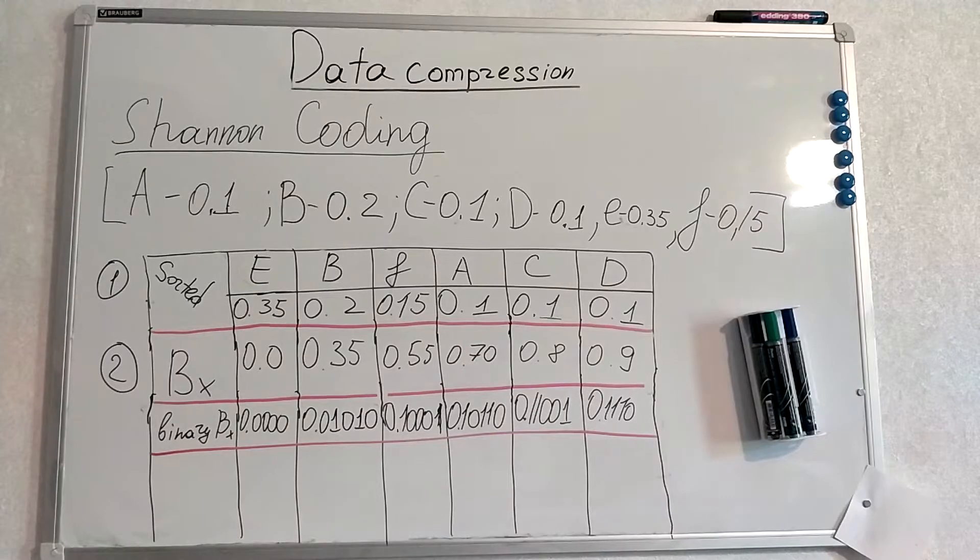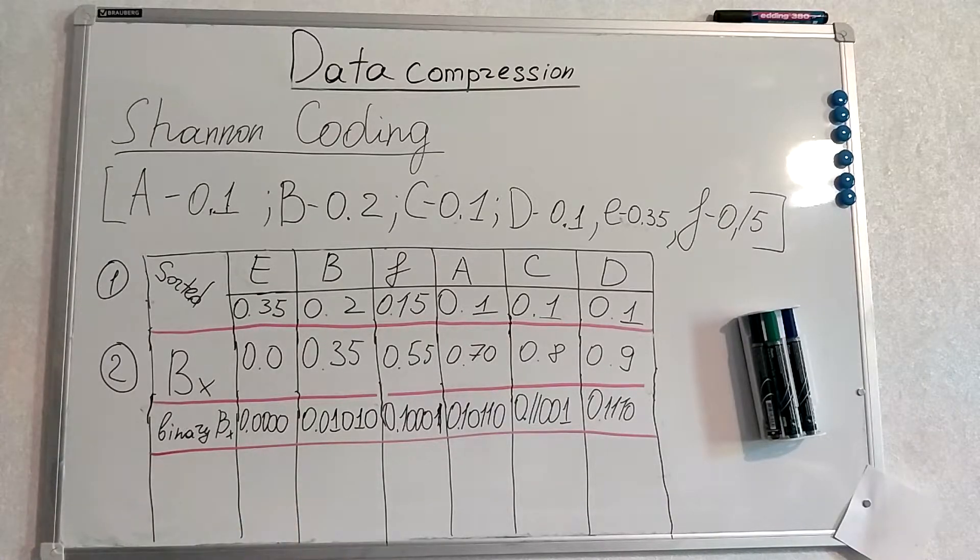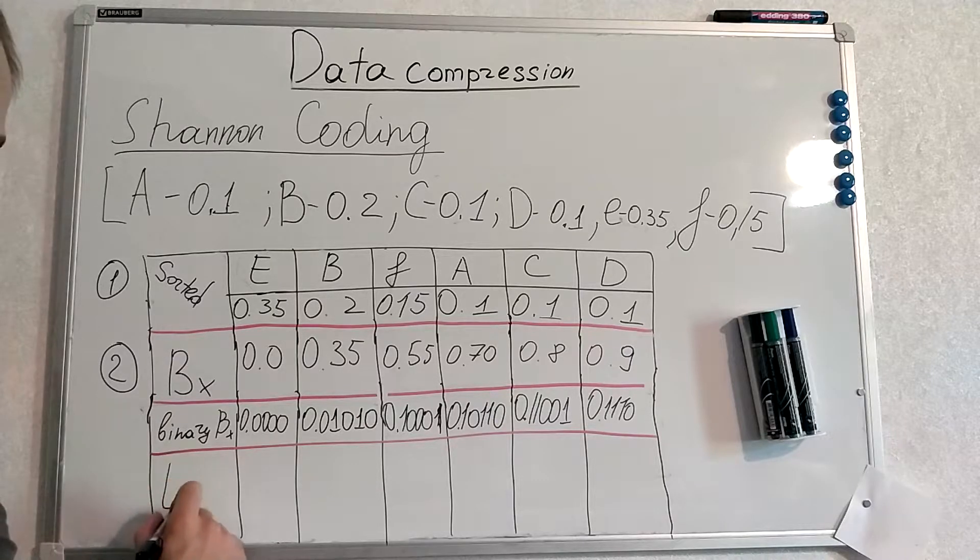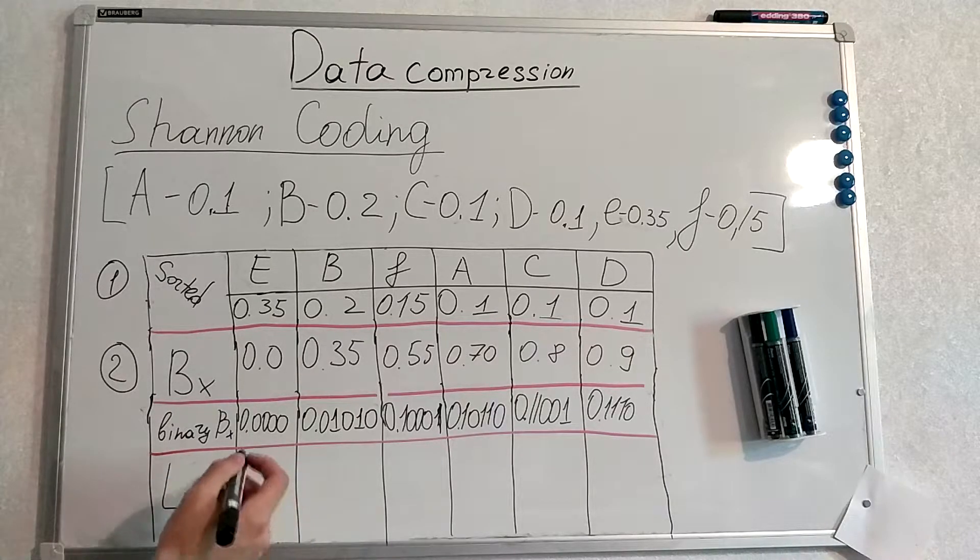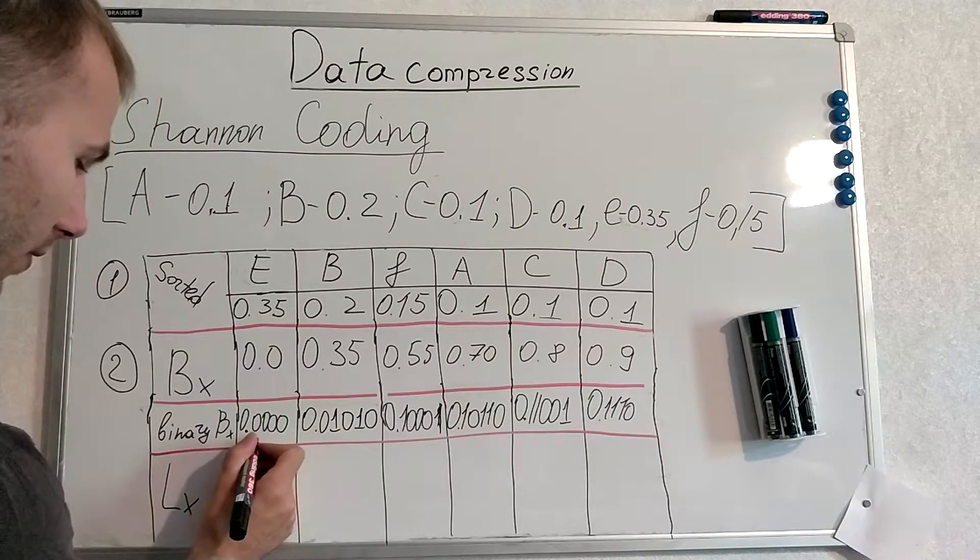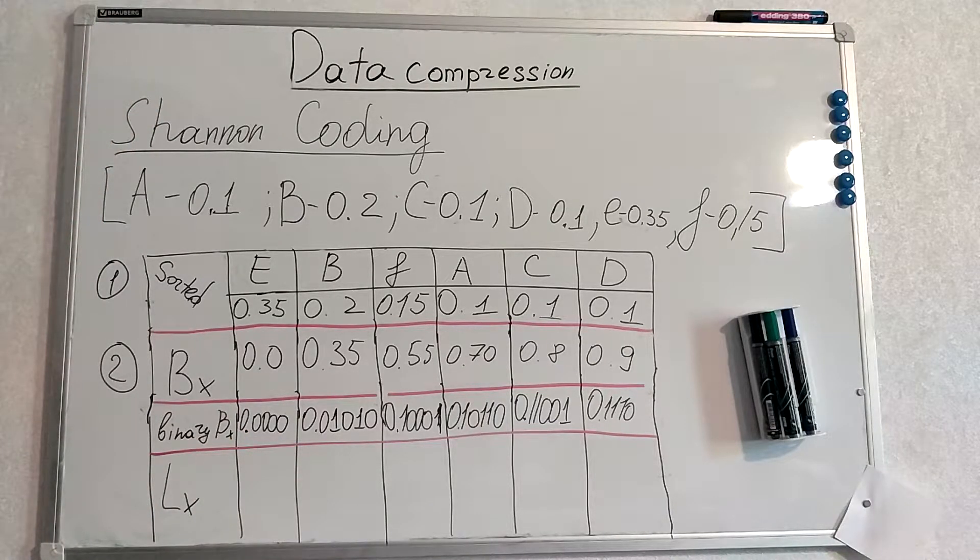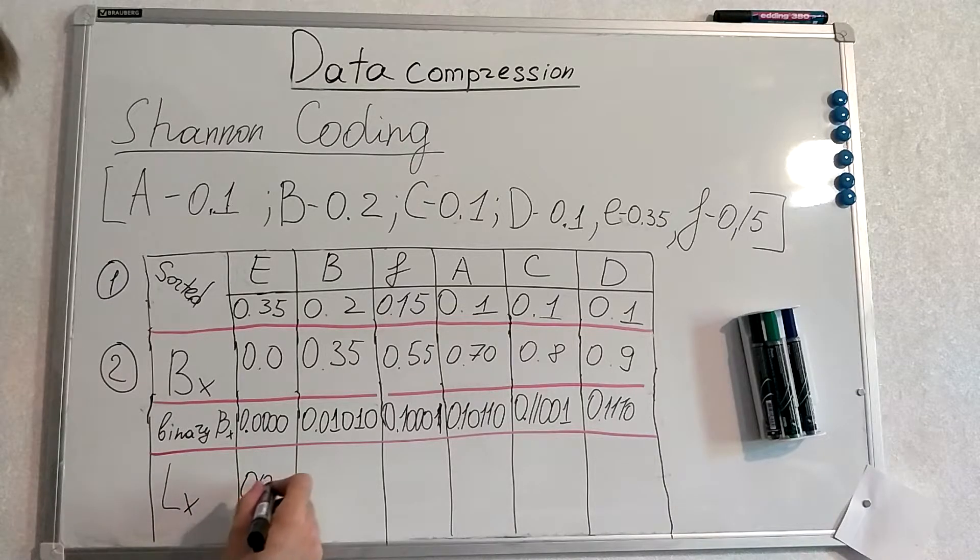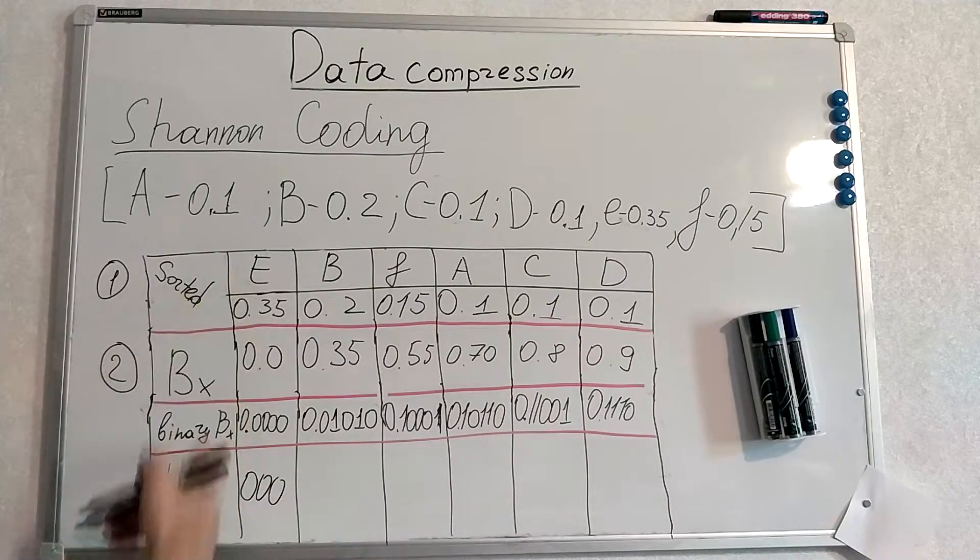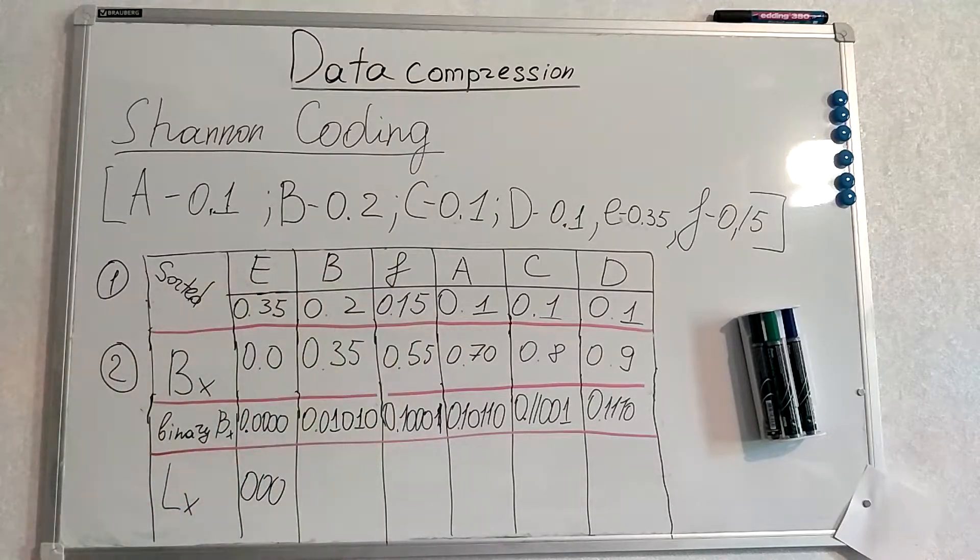On the next step we will counter it in a very elegant manner. We will have to find Lx. Lx is the length. How many symbols after the dot we will use as a binary, ternary, or whatever arity representation at the end. For example if Lx is 3 we will use 0 0 0. Lx differs from symbol to symbol and I will give you the formula right now.